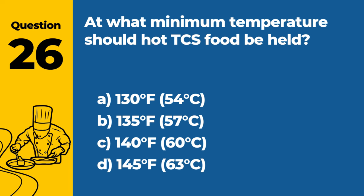Question 28: Describe the FIFO method in food storage. A. First in, first out — using older stock before newer stock. B. First in, first out — using newer stock before older stock. C. Last in, first out — using the most recently received items first. D. Randomly using stock regardless of when it was received. Answer: A. First in, first out — using older stock before newer stock. The FIFO (first in, first out) method in food storage involves using the older stock before the newer stock to ensure proper stock rotation and minimize waste.